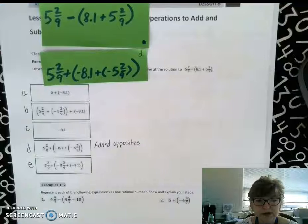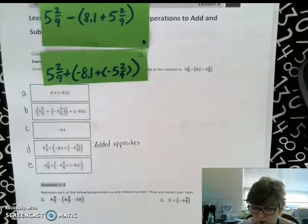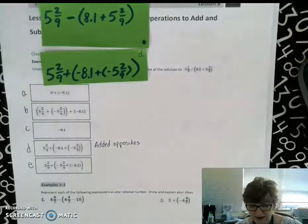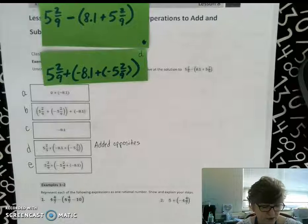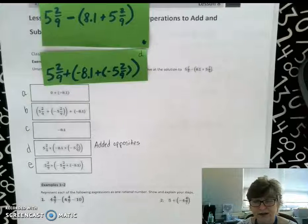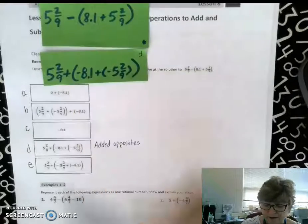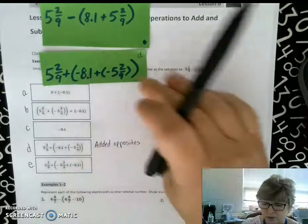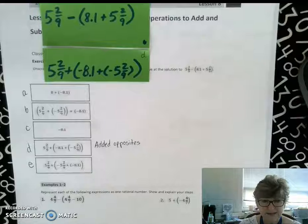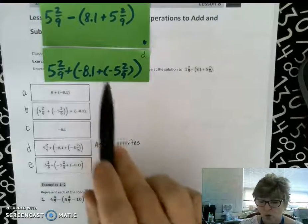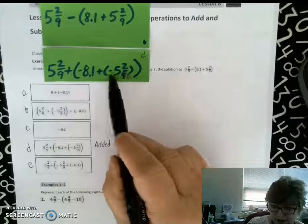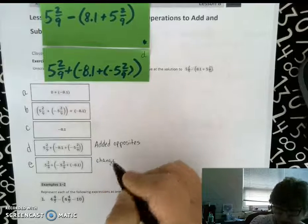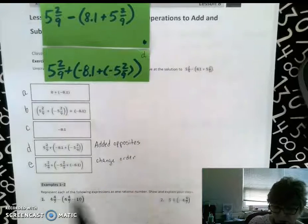From here I want to think about are there numbers that seem to be very compatible that work well together and be easier for me to solve. As you look at this you may find that in fact it would be easier for me to get the 5 and 2/9ths closer to the other 5 and 2/9ths. So that means I'm going to take this sum and move these two. I haven't taken away the parentheses. So my next step is simply to change the order of the 5 and 2/9ths, the negative 5 and 2/9ths and the negative 8 and 1/10th.